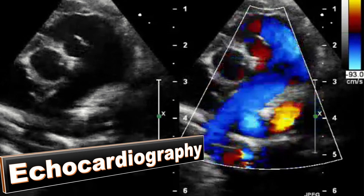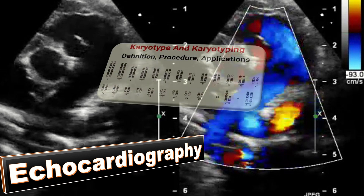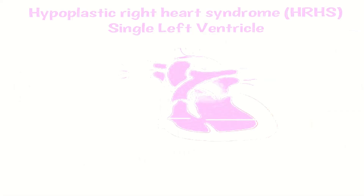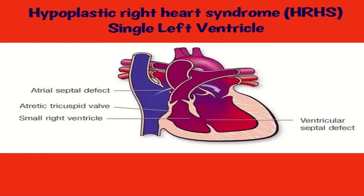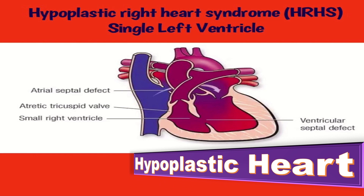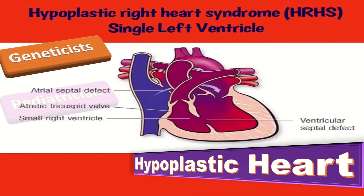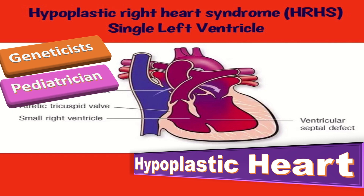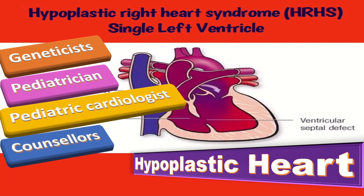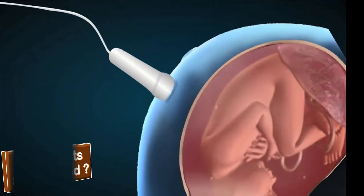This should be followed by karyotyping to exclude chromosomal abnormalities. Anomalies that are not compatible with life, such as hypoplastic right heart, should be managed jointly with a clinical geneticist, pediatrician, pediatric cardiologist, and counselors.